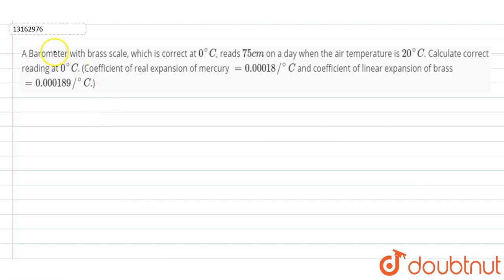So, the question here is that we have a barometer with brass scale, which is correct at 0 degree Celsius. It reads 75 cm on a day when the air temperature is 20 degree Celsius.